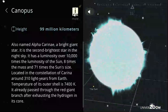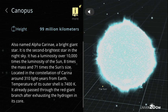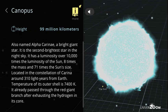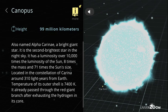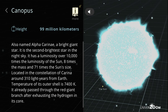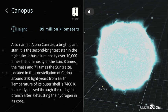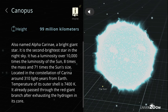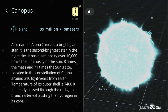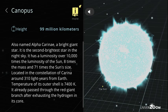Canopus, diameter: 99 million kilometers. Also named Alpha Carinae, a bright giant star. It is the second brightest star in the night sky. It has a luminosity over 10,000 times the luminosity of the sun, 8 times the mass and 71 times the sun's size. Located in the constellation of Carina around 310 light years from Earth. Temperature of its outer shell is 7,400 K. It already passed through the red giant branch after exhausting the hydrogen in its core.